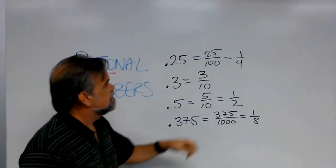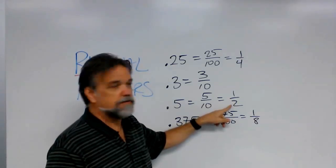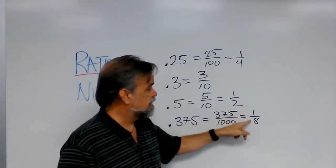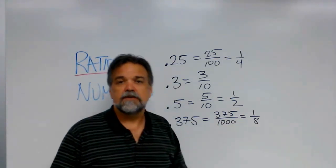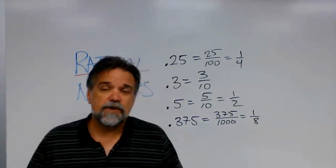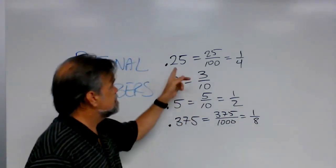Numbers like this: one-fourth, it's one divided by four, or one-half, it's one divided by two, three-tenths, three divided by ten, one-eighth, one divided by eight. So that's what a rational number is, and a rational number can be written as a fraction, like I just showed you, or it can also be written as a decimal.